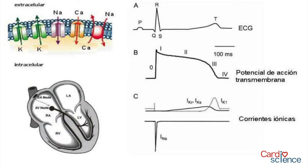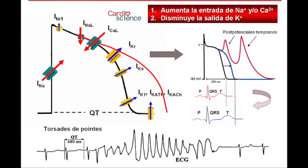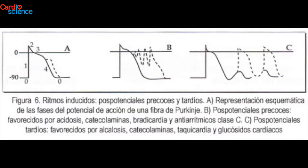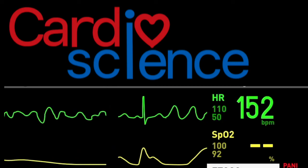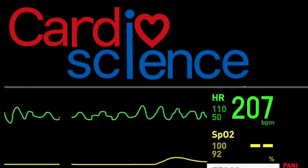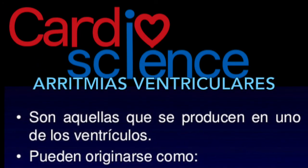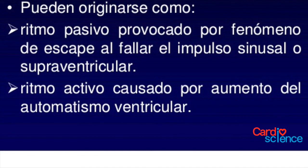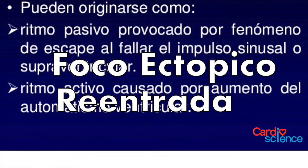Estos focos de automaticidad alterada se manifiestan a nivel auricular, nodal o ventricular. Las células miocárdicas no marcapasos que en condiciones normales no muestran actividad espontánea pueden presentar propiedades de automatismo cuando el potencial diastólico máximo se eleva hasta el potencial umbral, explicado por alteraciones de corrientes que dan lugar a una corriente despolarizante de entrada y reducción de la conductancia del potasio.